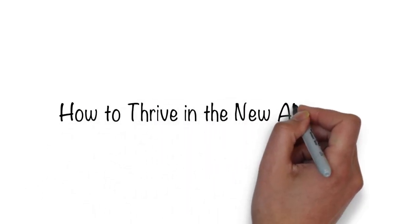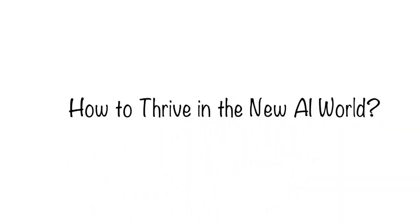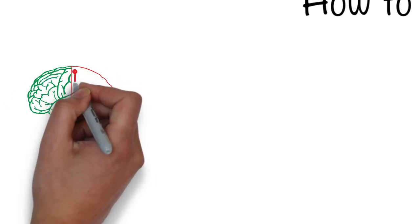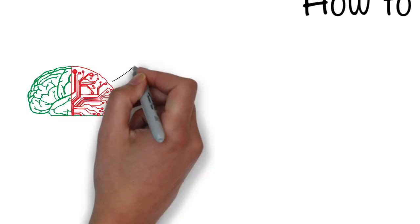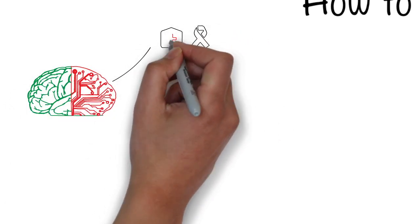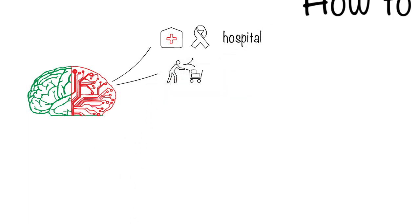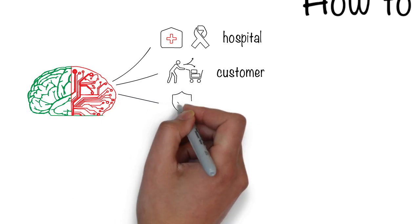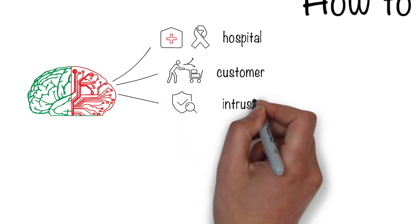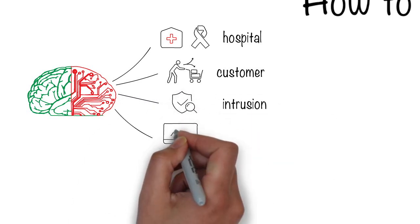How to Thrive in the New AI World. We come across a great number of things that AI can accomplish, from hospitals using it to detect cancer to the ability to predict what the customer will do next, from detecting software intrusions to executing high-frequency trading.